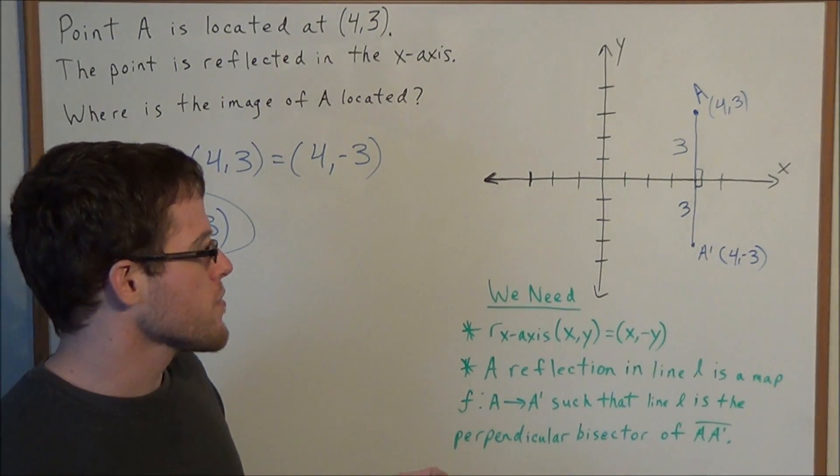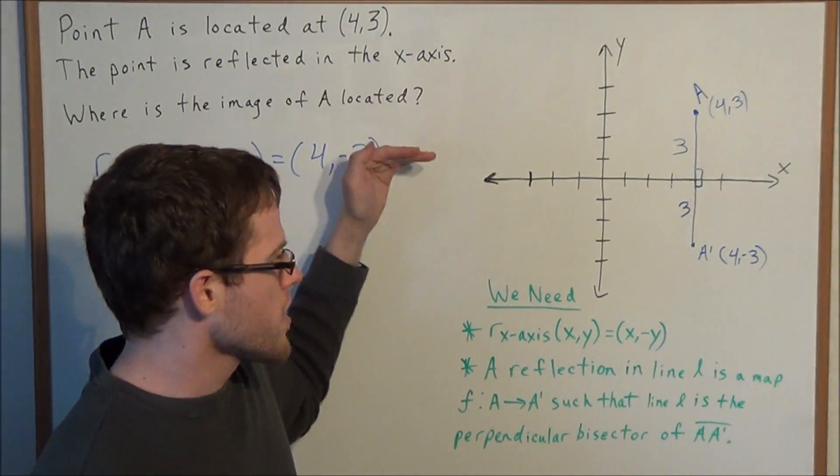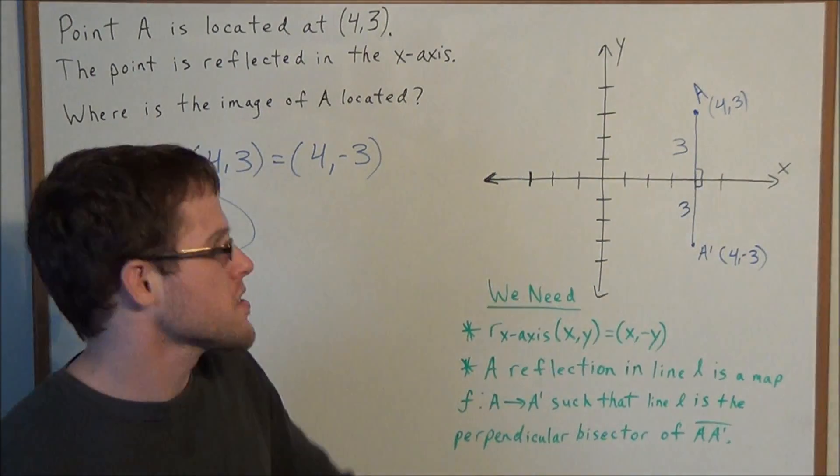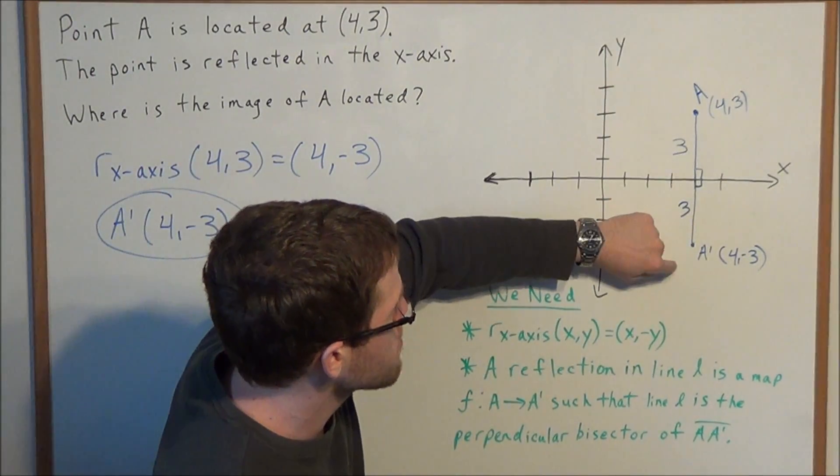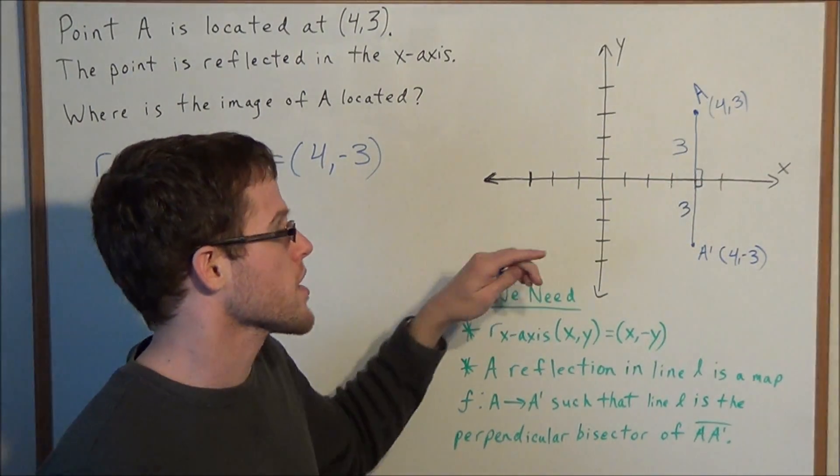Another way I like to think of reflections: imagine you're writing this on a piece of paper, and you fold the paper at the x-axis. The point A and A prime would have to touch in order for the x-axis to be the reflection line mapping A to A prime.